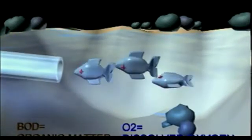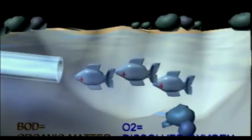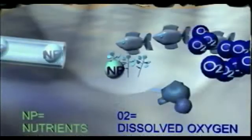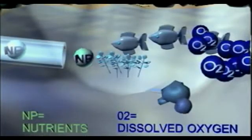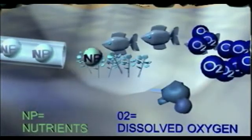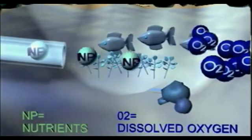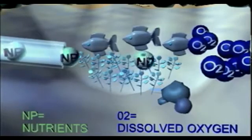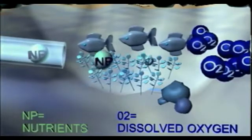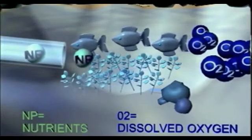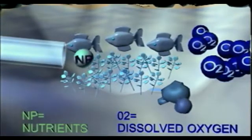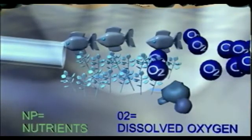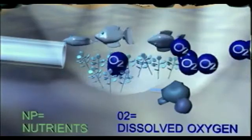These problems are actually caused by an unnaturally high consumption of oxygen. But if nutrients such as phosphorus or nitrogen are discharged into a water, they provide a food source for algae and plankton. This new biomass is in fact organic matter, and when this decomposes, we have an additional consumption of oxygen.